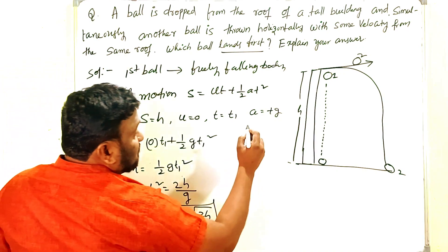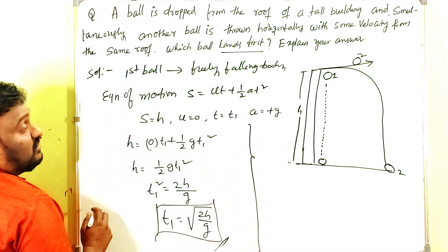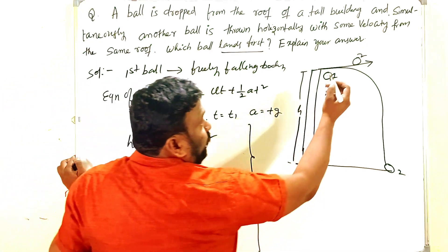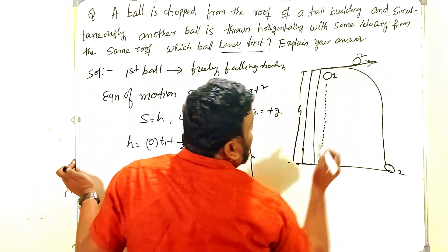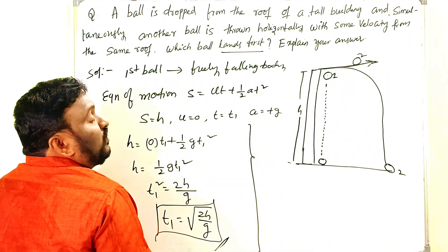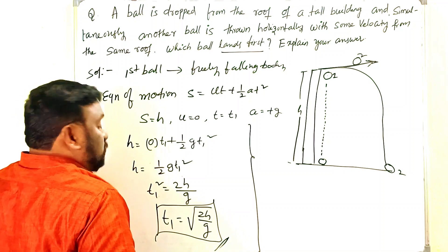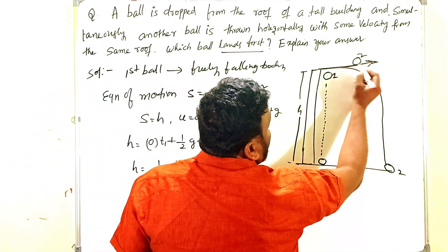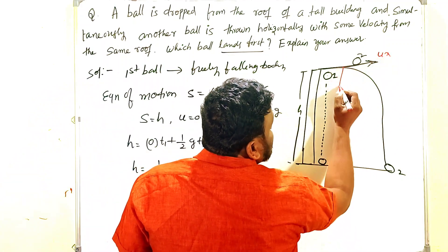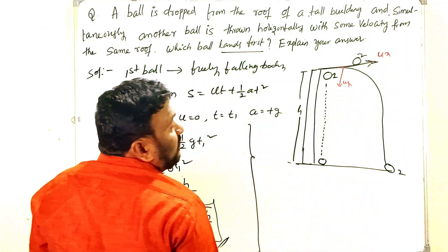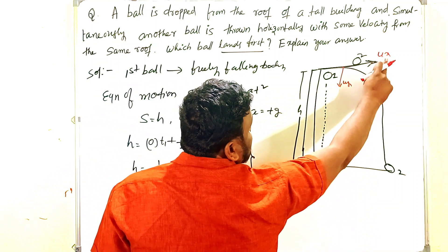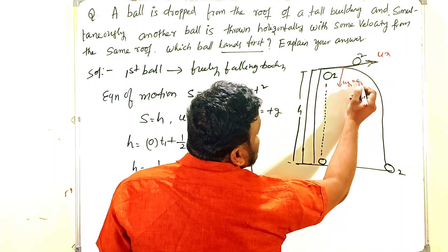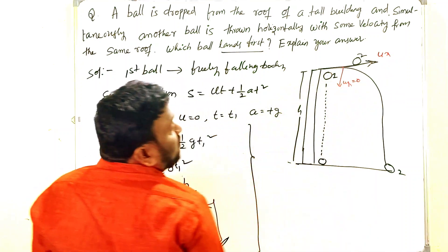Now for the second case — how do we find the time taken by the second ball to reach the ground? When the ball is projected horizontally, there is some horizontal velocity but there is no vertical velocity at the point of projection from the roof of the building. So uₓ = some value and u_y = 0.